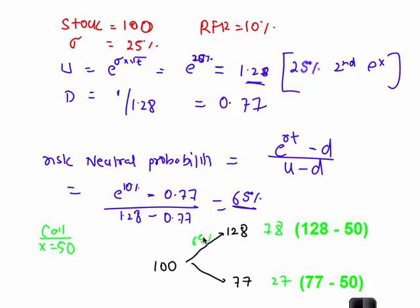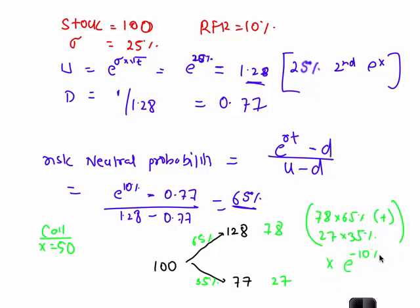There is a 65% chance that value will increase, 35% chance that value will decrease. So one year from now, value of your option would be 78 into 65% plus 27 into 35%. And since we have to take present value of this number into e raised to minus 10%. So this would be the value of call option.